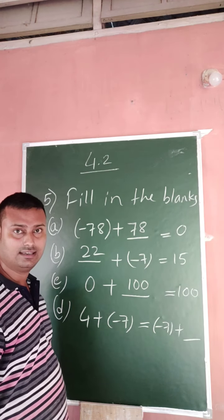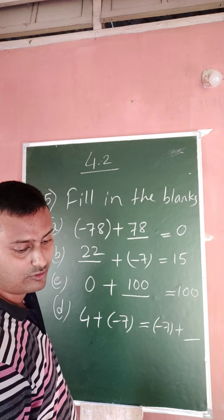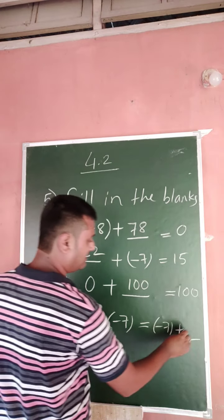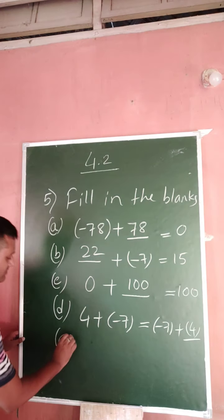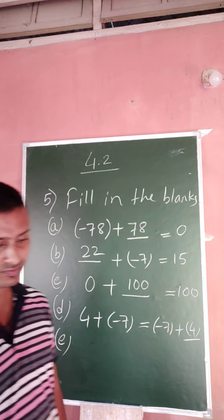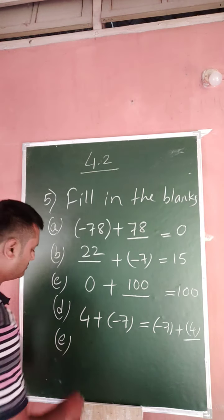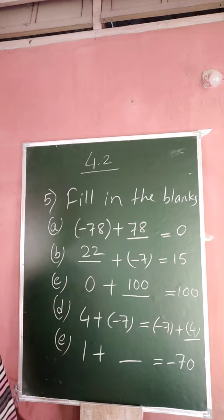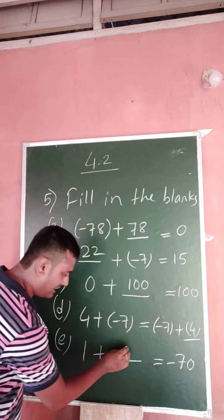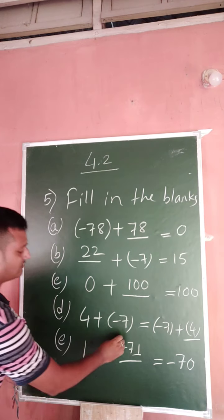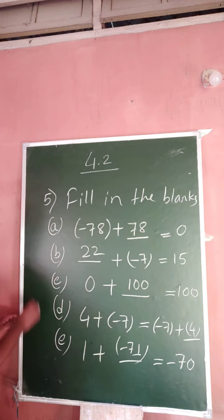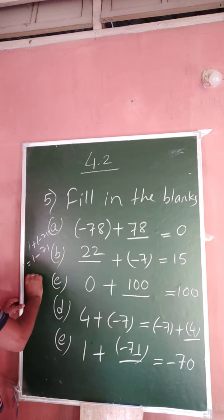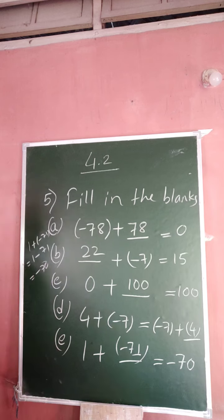So 4 plus minus 7, minus 7 plus 4, 1 plus this equals 1 plus this equals minus 70. So that means if you add minus 71, 1 plus minus 71, it becomes 1 minus 71, so it becomes minus 70.